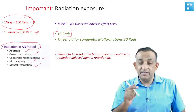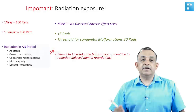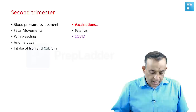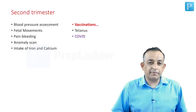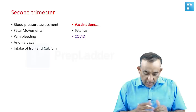From 8 to 15 weeks, the fetus is most susceptible to radiation-induced mental retardation. Before 8 weeks and after 20 weeks, the risk of radiation-induced mental retardation is much lower. CT scan technicians are trained to check pregnancy status before proceeding, which provides an important safety checkpoint.